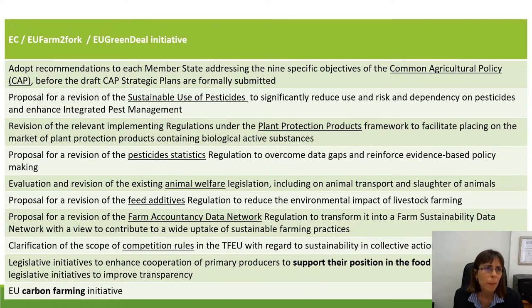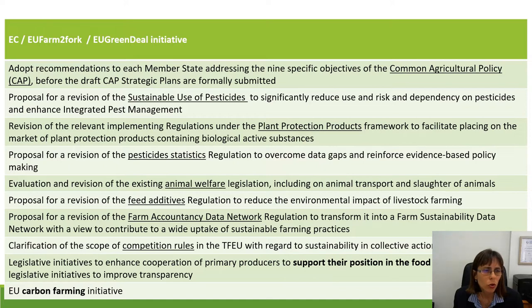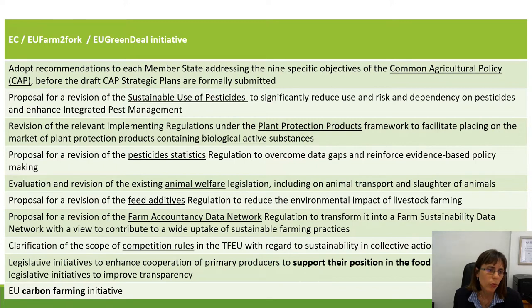When discussing sustainability and sustainable development goals, it's important that each country in the EU adopts recommendations for member states addressing nine specific objectives. There are different types of documents and legislation that need to be followed regarding sustainable use of pesticides, plant protection products, pesticide statistics regulation, evaluation and revision about animal welfare, proposals regarding feed additives, farm accountancy data network regulation, improving transparency in the food chain, and the EU carbon farming initiative.